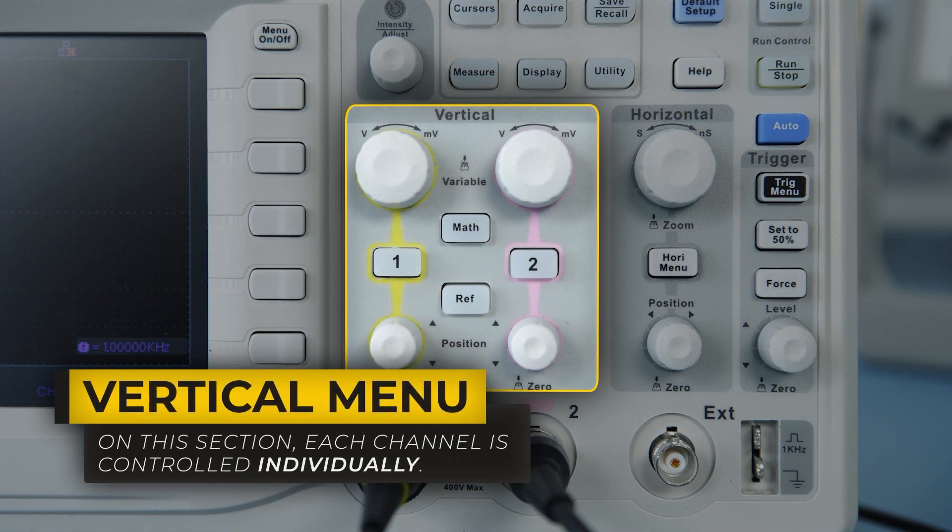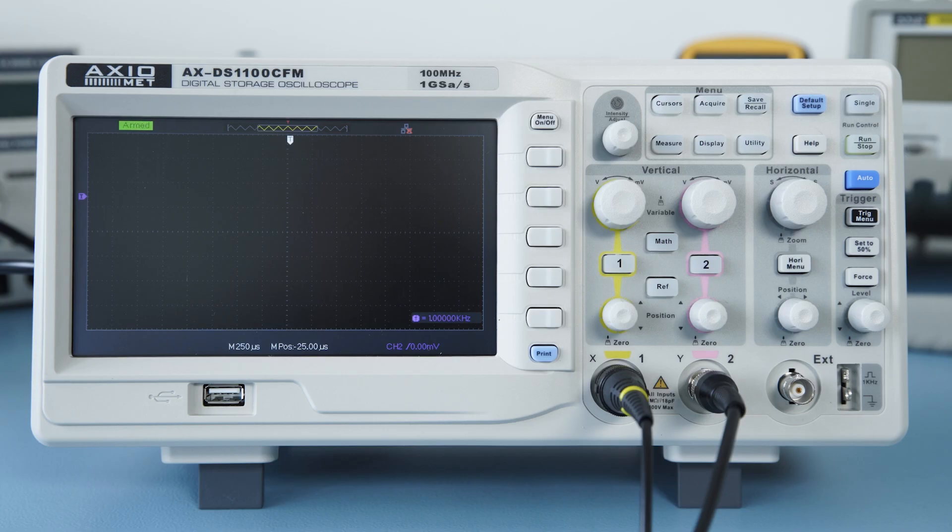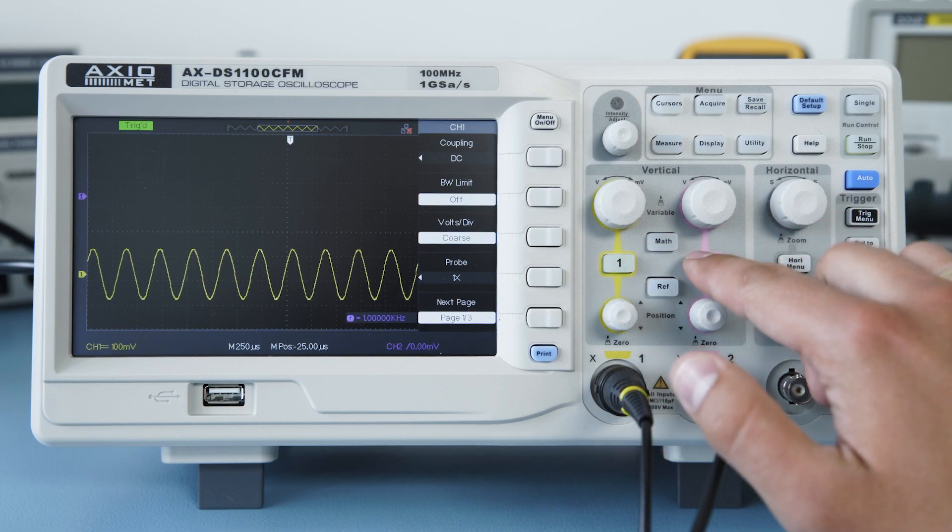On the vertical section, each channel is controlled individually, which allows easy access to its menu and other settings. To turn on the channel and access its menu, press the middle button.